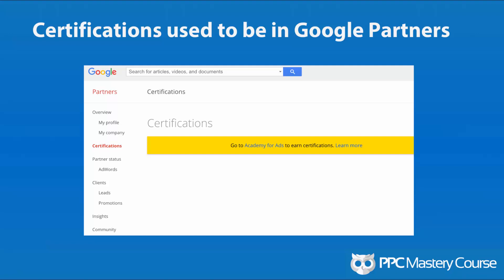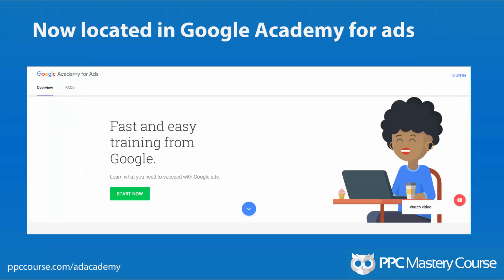It says you need to go to Academy for Ads to earn certifications. If you click through on that URL, you are taken to this landing page — Google Academy for Ads. And if you don't want to type in the URL, just go to ppccourse.com/ad-academy and we'll redirect you right to this homepage.